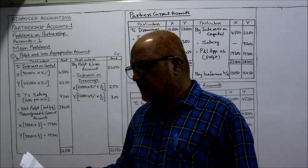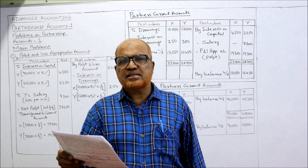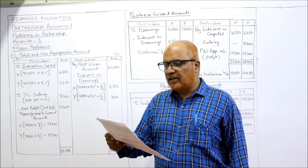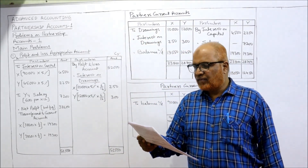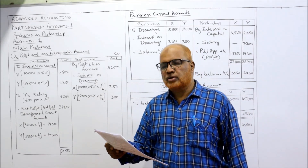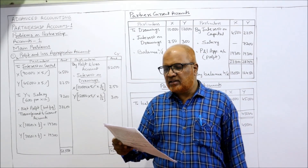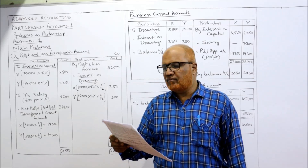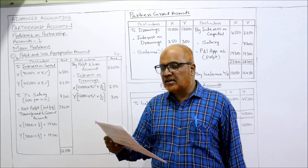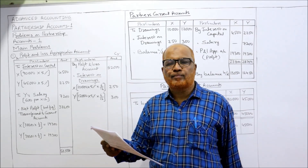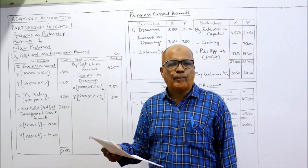Now see the first problem. X and Y start a business with capitals of 90,000 and 45,000 on 1st January 2008. So the capital of X is 90,000 and Y is 45,000. Y is entitled to a salary of 600 per month, meaning there is an agreement that Y should be paid a salary of 600 per month.